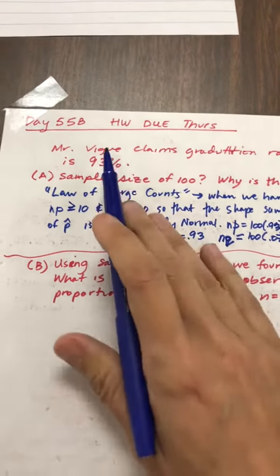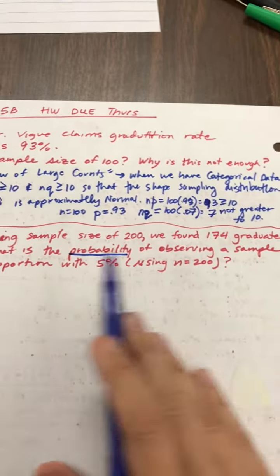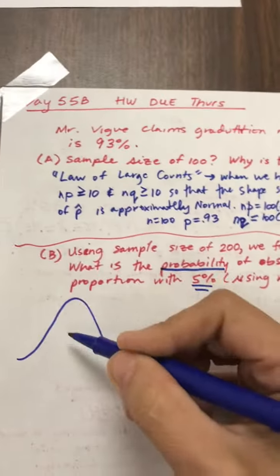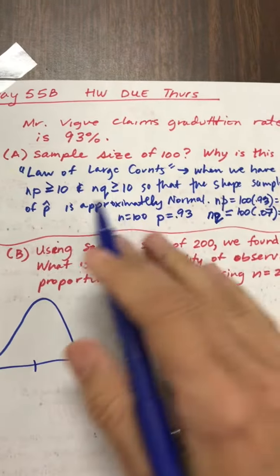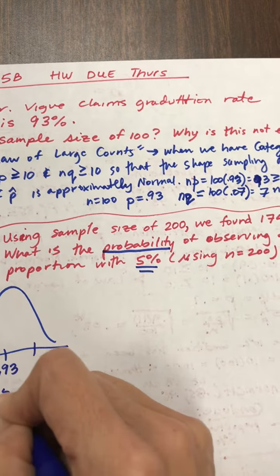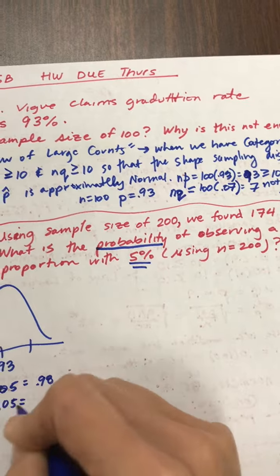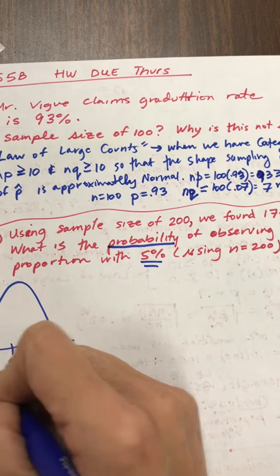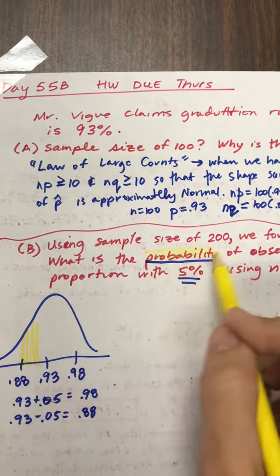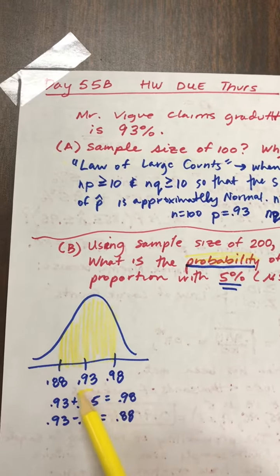Okay, so now part b, they used a sample size of 200, and we found 174 graduates. What's the probability of observing a sample proportion within 5% of that information? So we still predict that this would be the average, so whatever proportion, which is 93. And so 5% on either side would just be to add 5%, so 0.98, and subtract 5%, so that'd be 0.88.